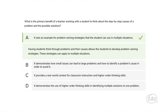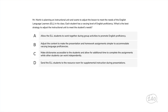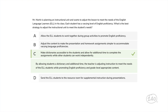Here's a question from Competency 7, Teaching English Language Learners. Mr. Martin is planning an instructional unit and wants to adjust the lesson to meet the needs of ELLs in his class, each with a varying level of English proficiency. What is the best strategy? The correct answer is: making dictionaries accessible to the students and allowing additional time to complete assignments while other students can work independently. By allowing students a dictionary and additional time, the teacher is adjusting instruction to meet ELL needs while promoting English proficiency and grade-level appropriate content.